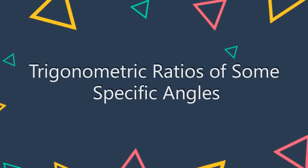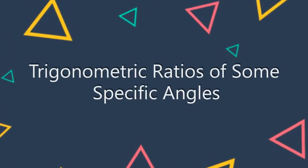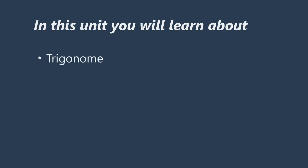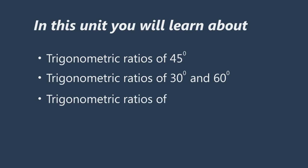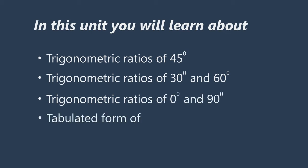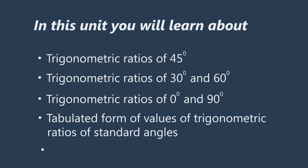Trigonometric Ratios of Some Specific Angles. In this unit, you will learn about: Trigonometric Ratios of 45 degree, Trigonometric Ratios of 30 and 60 degree, Trigonometric Ratios of 0 degree and 90 degree, the tabulated form of values of Trigonometric Ratios of Standard Angles, and Illustrative Examples.